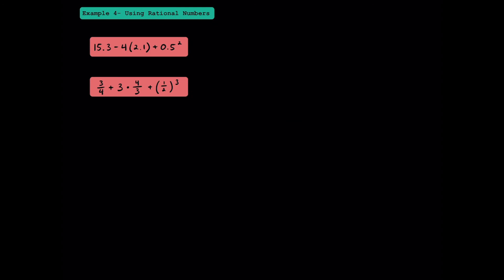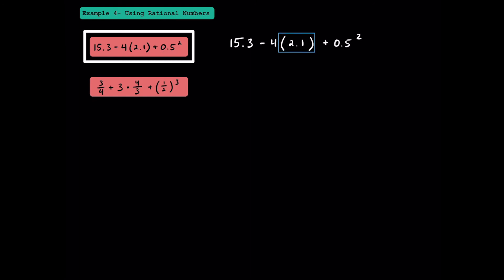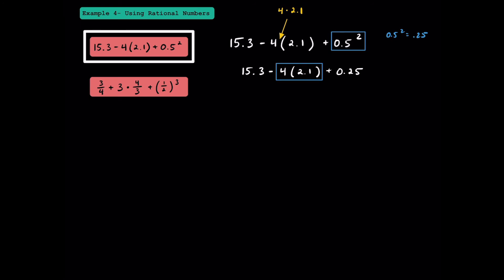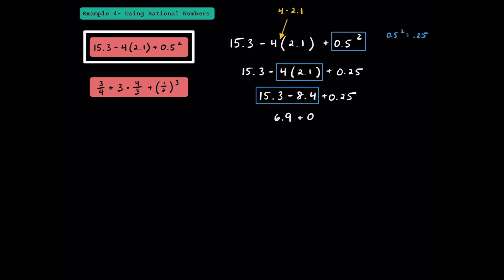Here in example 4, I'm going to solve two numerical expressions with rational numbers. For this first one, you may initially think to look at these parentheses, but since there's only one thing inside of them, there's nothing we can actually solve — the parentheses around the 2.1 are just there to let you know that we're multiplying 4 times 2.1. So the exponent is the most important thing to do first. 0.5 squared is equal to 0.5 times 0.5, which is 0.25. Next, we're going to multiply 4 times 2.1 to get 8.4. Between subtraction and addition, we're going to do the subtraction first. 15.3 minus 8.4 is equal to 6.9, so we can write 6.9 plus 0.25. Finally, we add 6.9 and 0.25 to get 7.15. That's our answer.